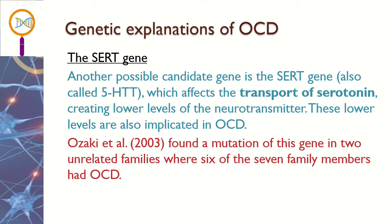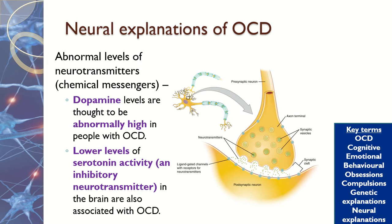A link to this is that if we're talking about serotonin and dopamine, then we're talking about neurotransmitters. So this genetic explanation is closely aligned with the neural explanation of OCD. It's important to note that dopamine levels are really high in people with OCD, and serotonin levels are really low in people with OCD.